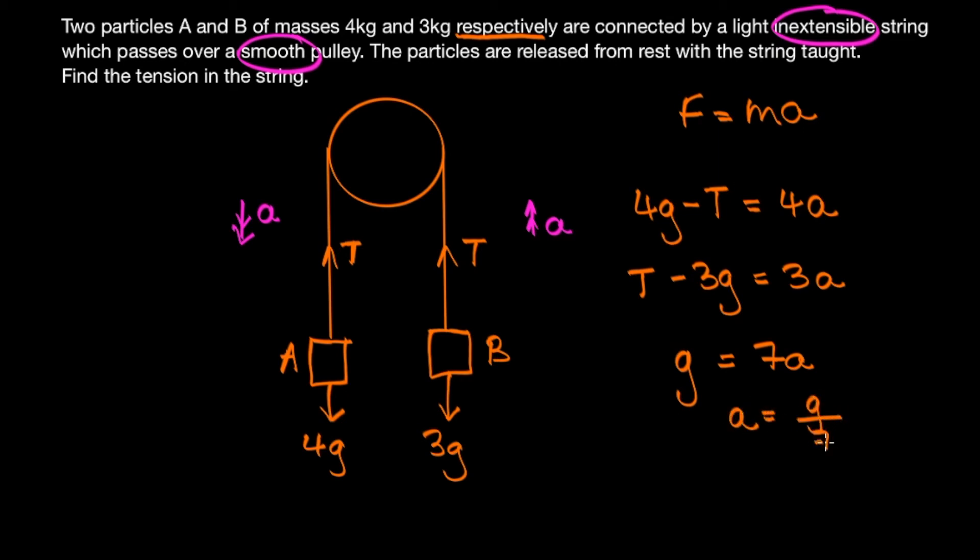So that tells us that a is equal to g over 7 meters per second squared. But in the question we were told to find the tension, and so if we plug a back into one of the equations, then that will give us our value for T.